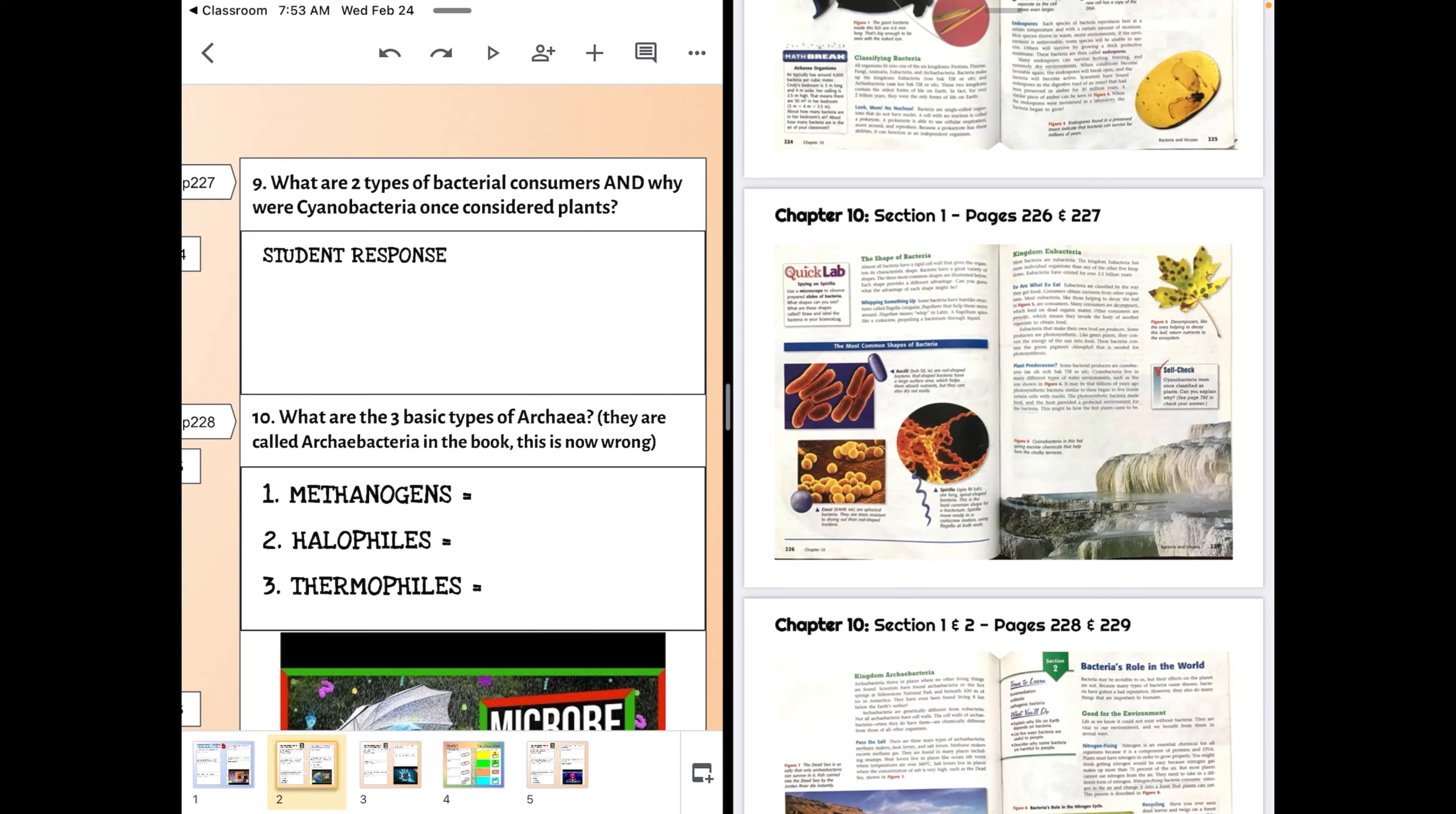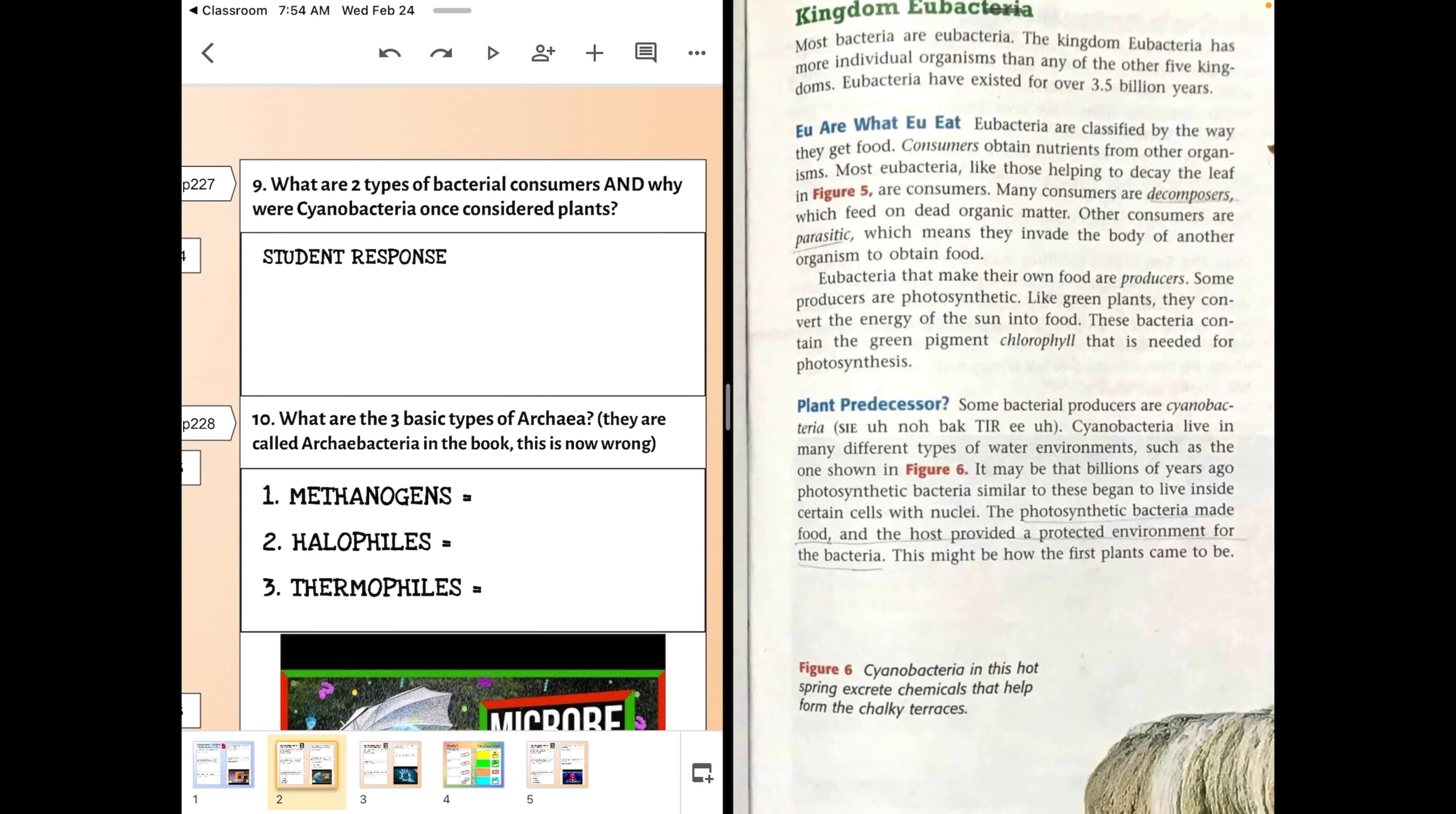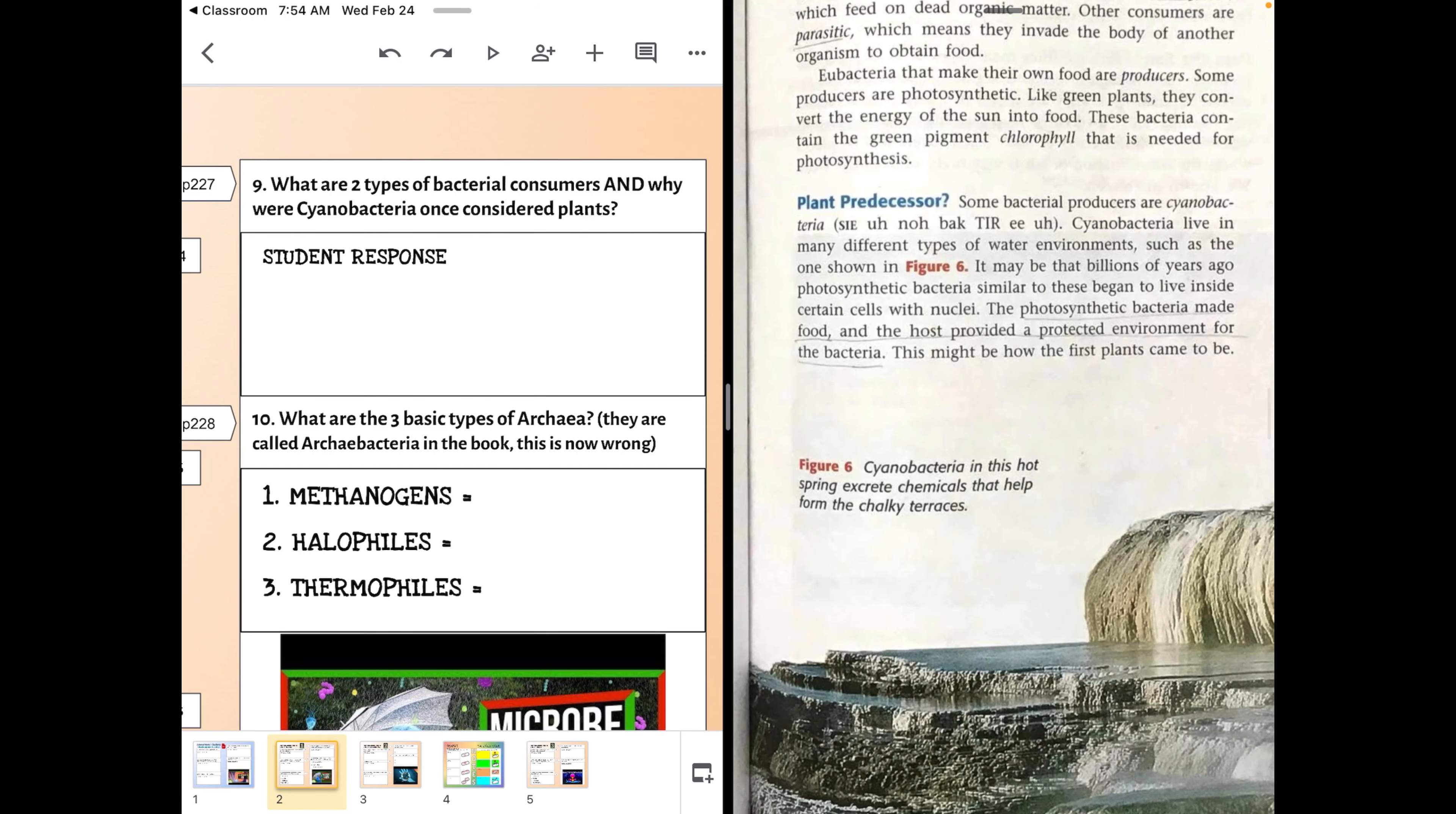Next up, bacteria generally consume other things, not all of them, but that means to eat. So there are two basic groups of eating bacteria, whereas cyanobacteria are not eaters, so why were they considered plants? So that question nine is there.